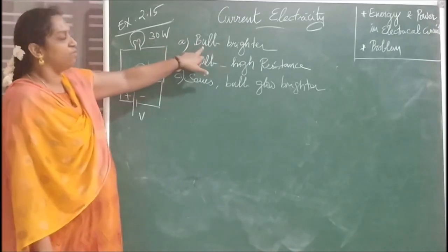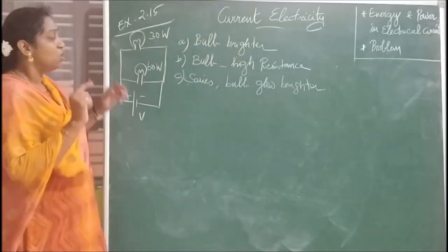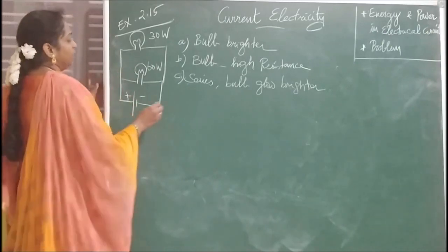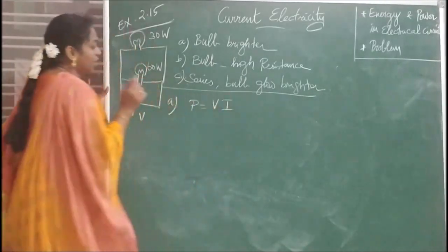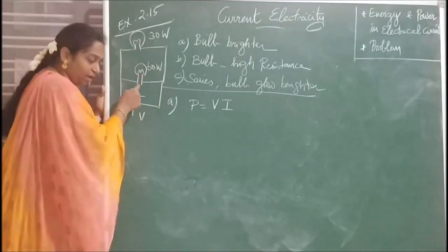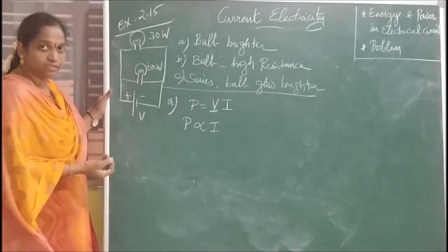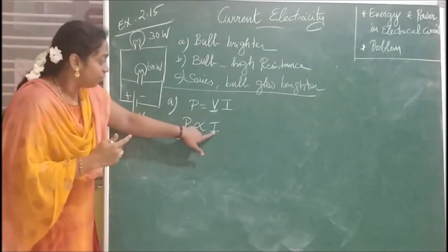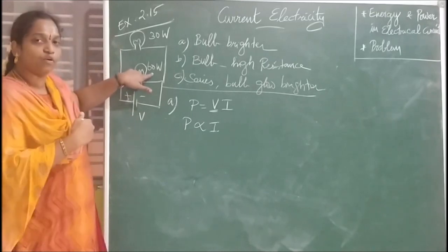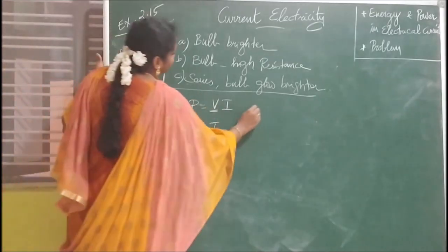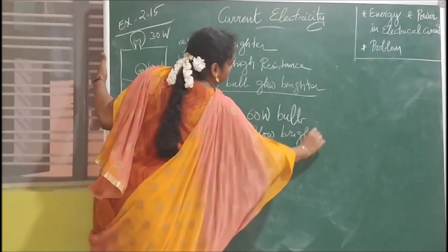For the first question: when connected in parallel, voltage remains the same across both bulbs. From the equation P = VI, since voltage is the same, power is directly proportional to current. The bulb with more power draws more current and glows brighter. Therefore, the 60-watt bulb will glow brighter when connected in parallel.